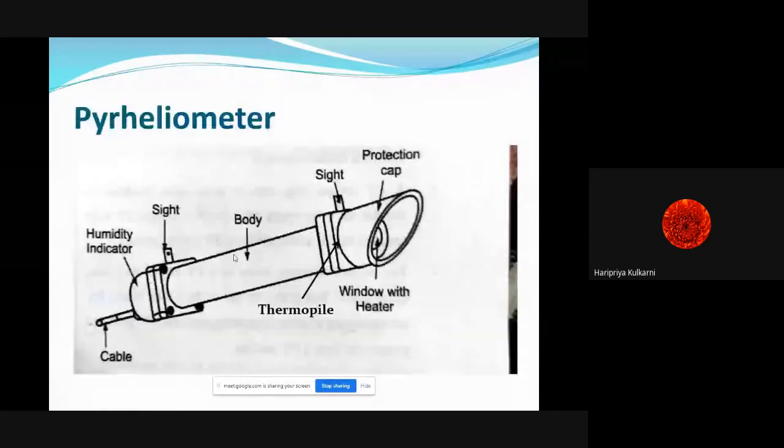The next instrument is pyrheliometer. It is used for measurement of direct beam radiation only. It is like a tube structure and mainly used along with the MPPT controller, which is maximum power point tracking. Depending upon the position of the sun, we arrange this equipment to face the sun, and therefore it can measure only direct radiation.